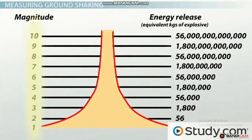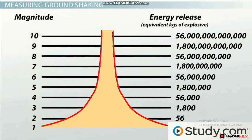The Richter Scale runs from one to ten, one being the least in magnitude and ten being the greatest, but it is logarithmic. This means that for each one point increase on the scale, we get ten times more ground shaking.